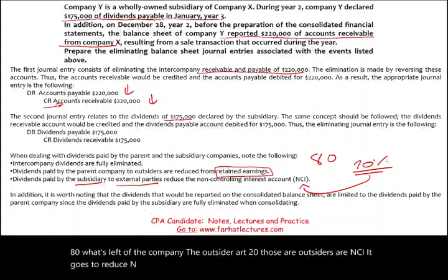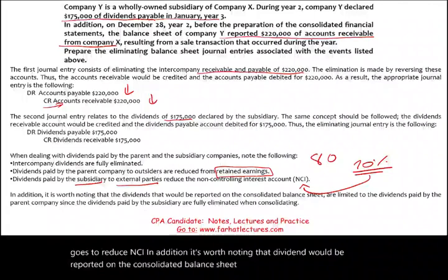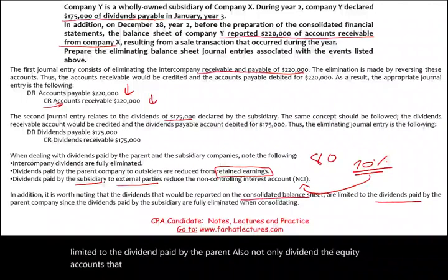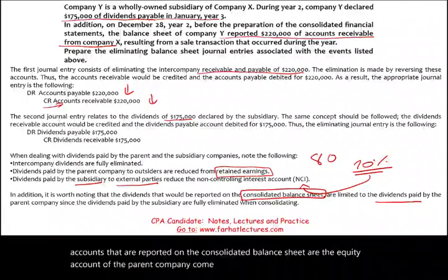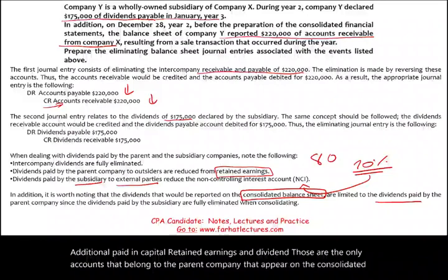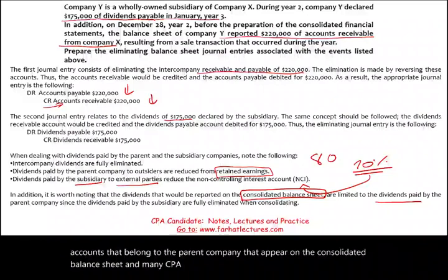Dividends reported on the consolidated balance sheet are limited to dividends paid by the parent. Furthermore, the equity accounts reported on the consolidated balance sheet are only the equity accounts of the parent company: common stock, additional paid-in capital, retained earnings, and dividends. Those are the only accounts that appear on the consolidated balance sheet, and many CPA exam questions test you on that knowledge.